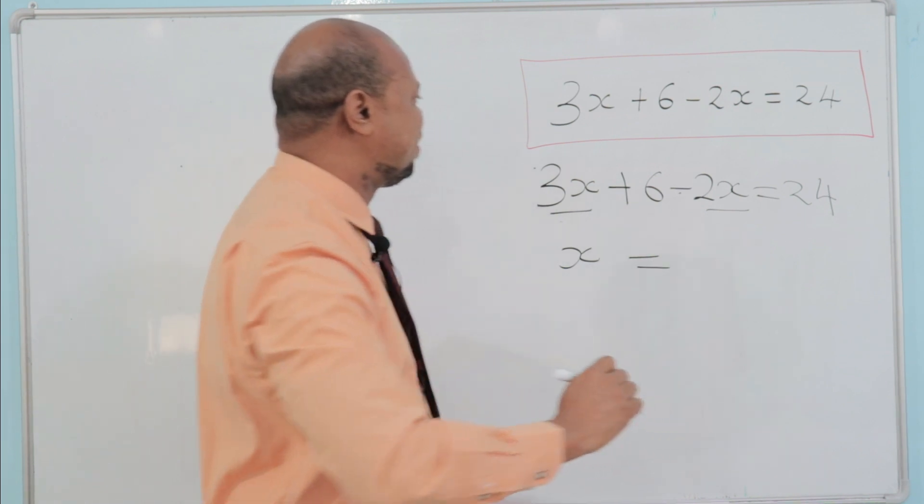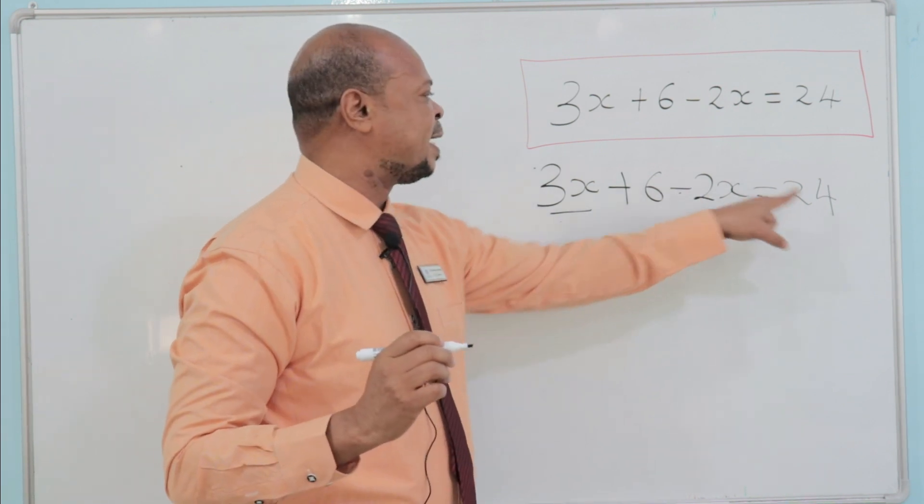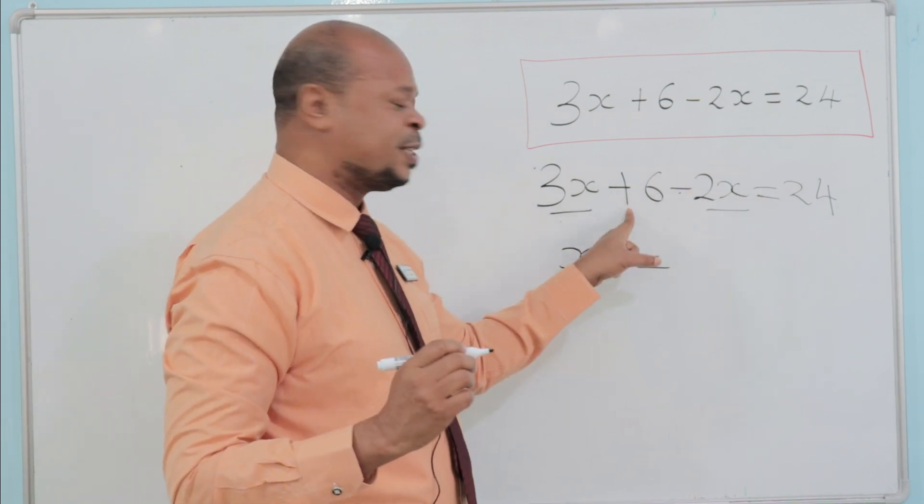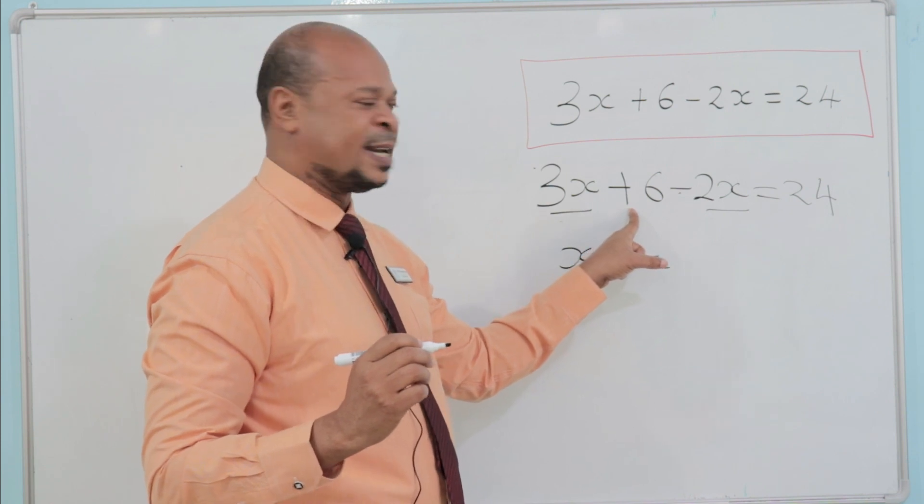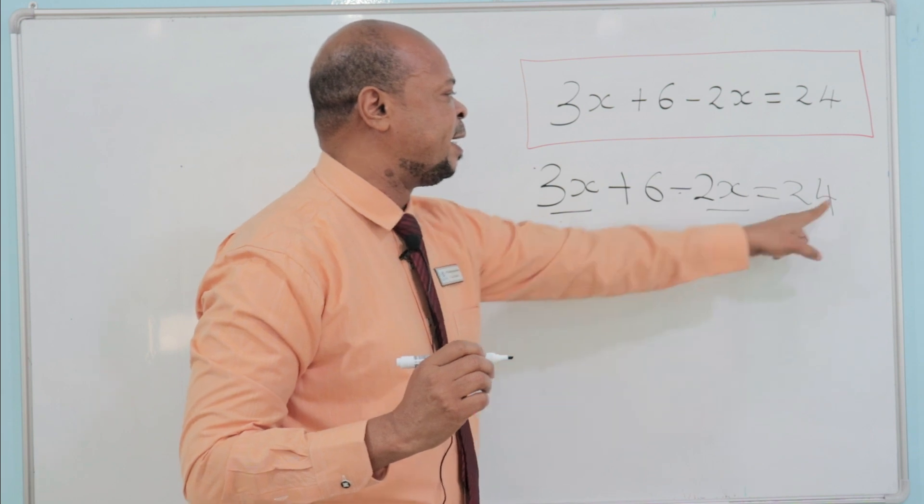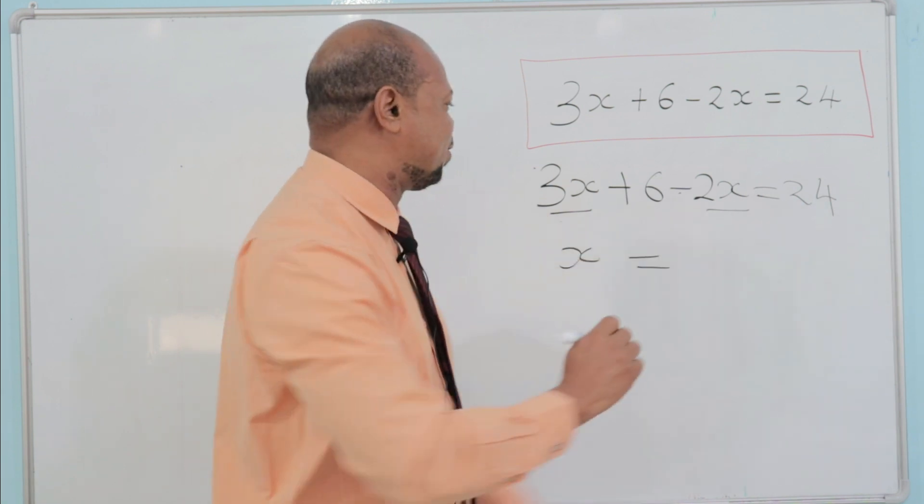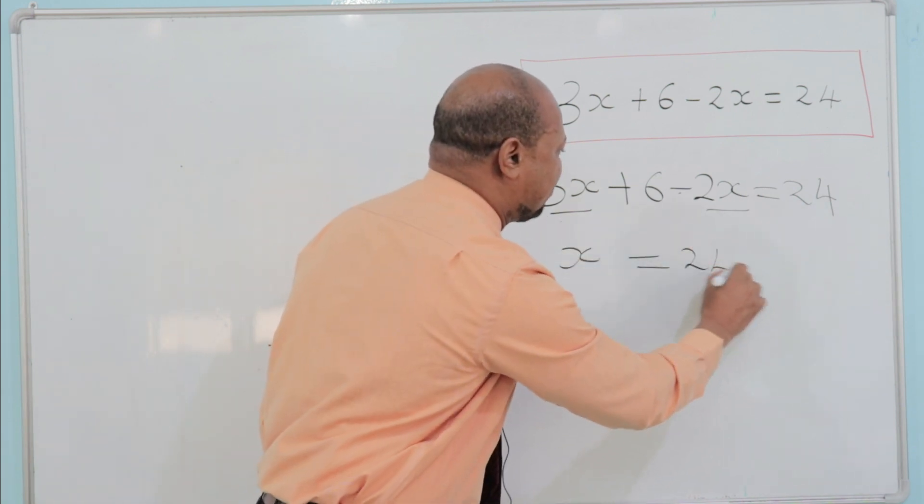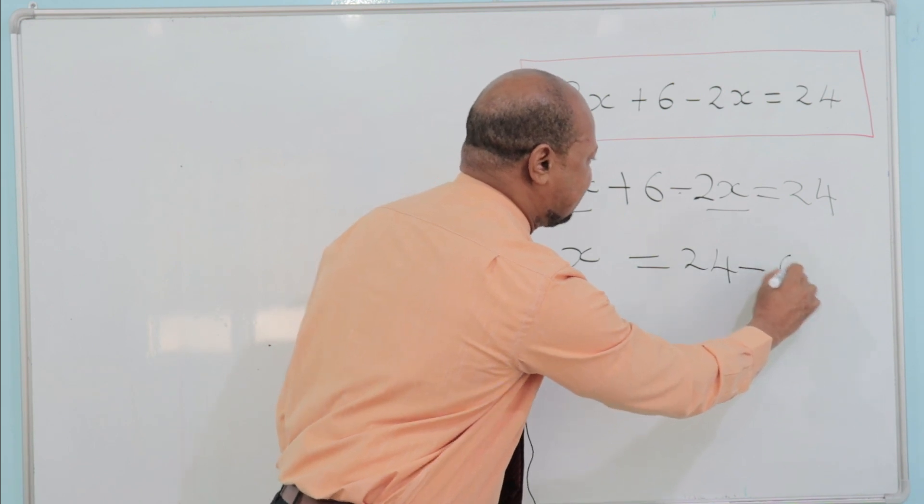On the other side, we have 6 and 24. 24 is a positive number here. When it goes to the other side of the equal sign, it will be minus. So, we shall have 24 minus 6.